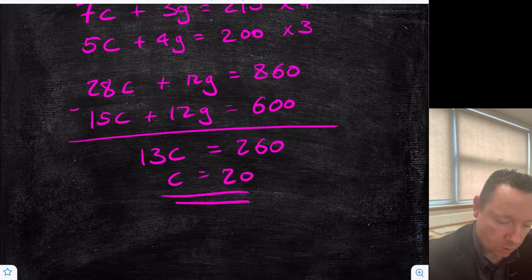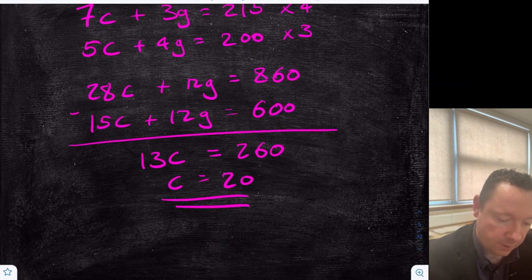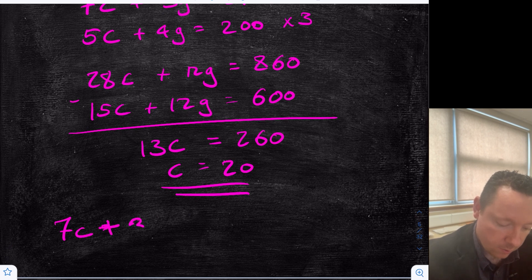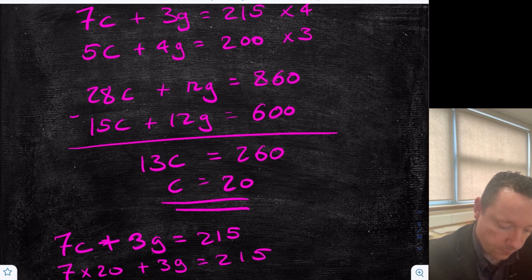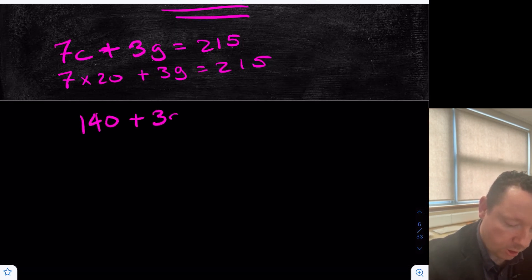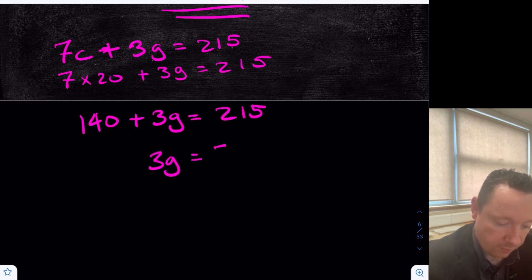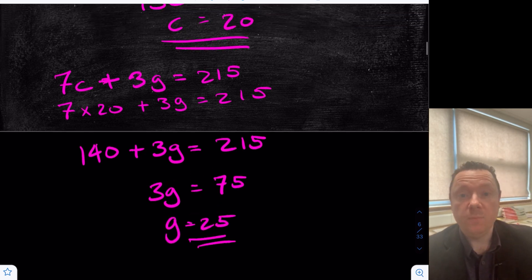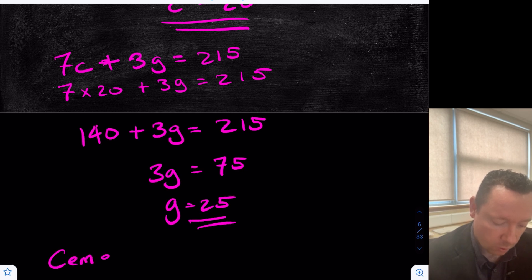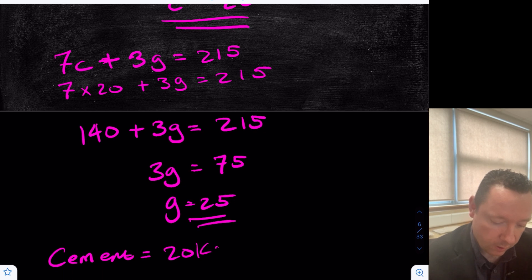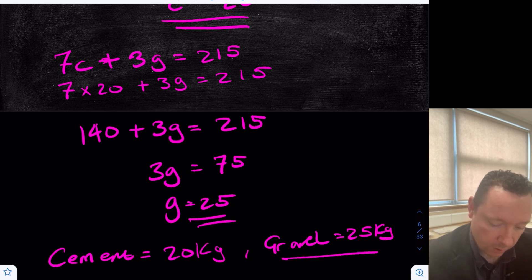Substituting C = 20 back into 7C + 3G = 215: 7 times 20 is 140, so 140 + 3G = 215. Therefore 3G = 75, so G equals 25. The cement weighs 20 kilograms and the gravel weighs 25 kilograms.